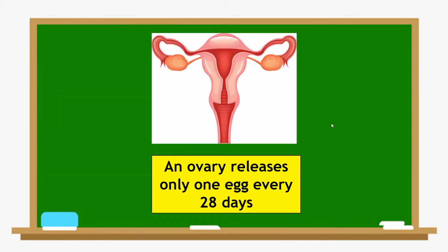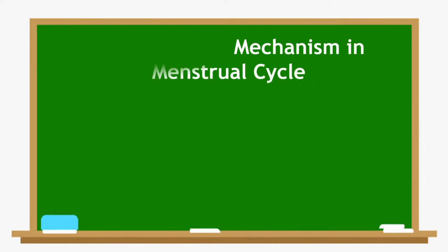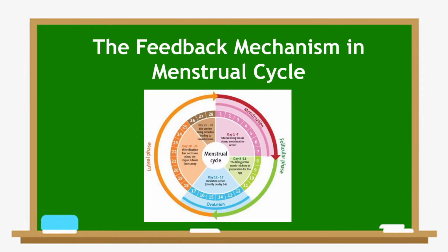An average female ovary releases only one egg every 28 days. Hormones control many of the changes in the female reproductive system, and one of these is the menstrual cycle. The menstrual cycle is the monthly hormonal cycle in the female's body that prepares for pregnancy. Let's learn more about the feedback mechanism in the menstrual cycle.